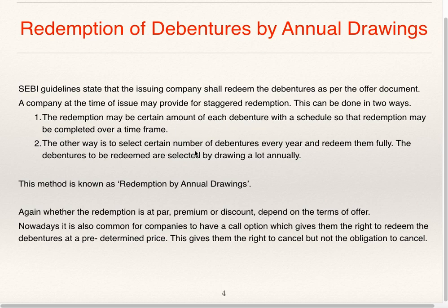The other way is to select a certain number of debentures every year and redeem them fully. This selection can be done by drawing lots annually. So in summary, two ways: either some part of each and every debenture will be redeemed over a period of time, or some debentures will be selected randomly and redeemed fully. This method is known as redemption by annual drawings.